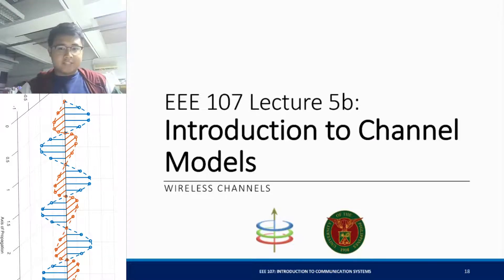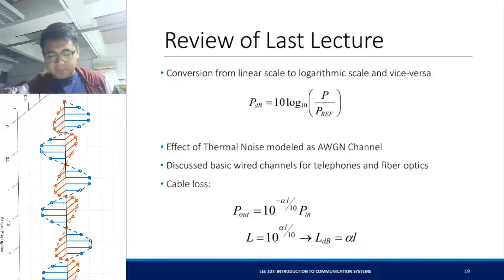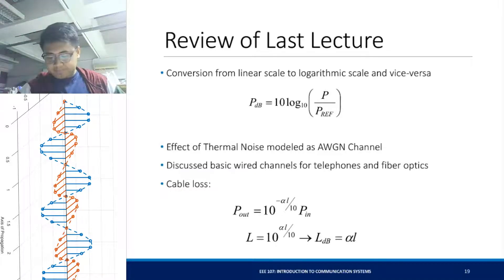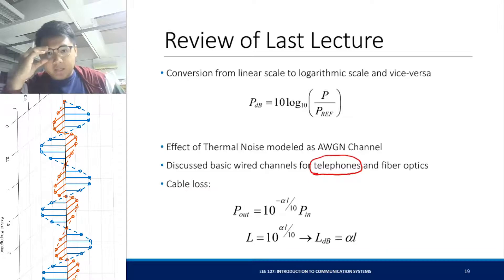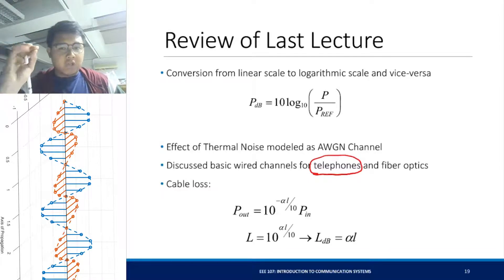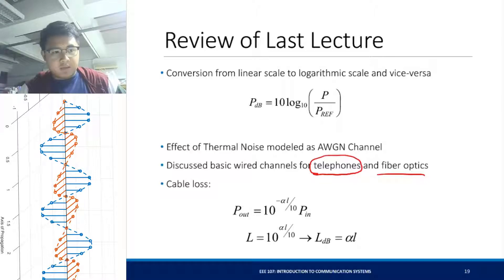Welcome to part 2 of lecture 5 here in Triple E 107. In this part of the lecture, we'll be talking about wireless channels. In the previous meeting, we talked about dB calculations and the effect of some wired channels for telephones and fiber optics. Coaxial cables are definitely lossy lines, and a fiber optic cable is used for long distances because of its low-loss property.